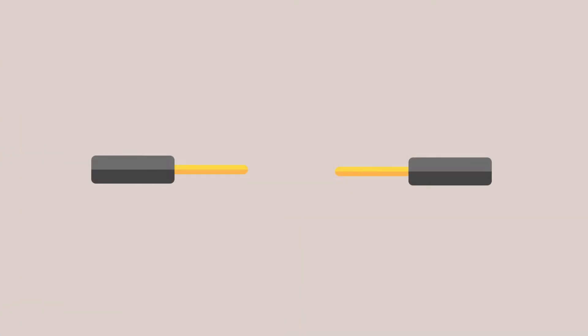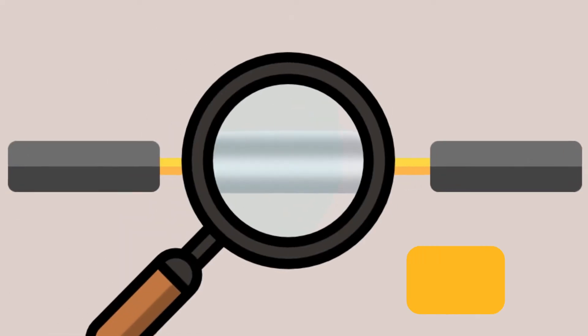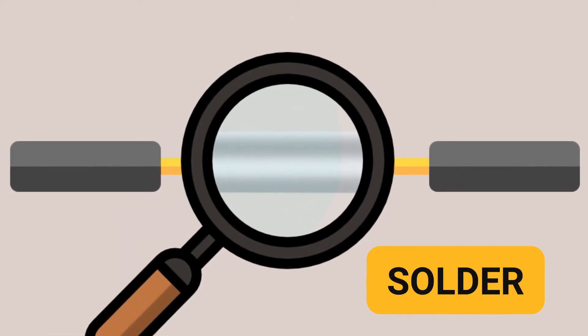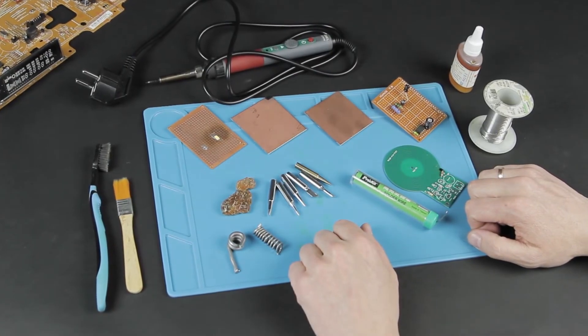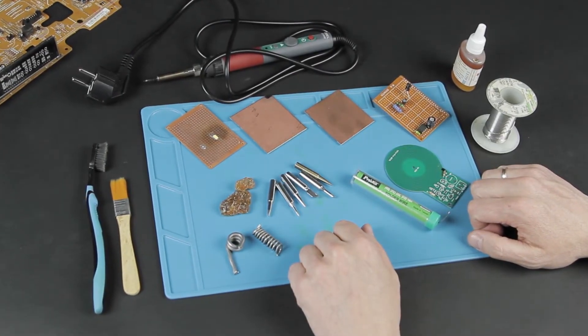What is soldering? It is the joining of two metal surfaces or objects using a third, more fusible metal. It is called solder. Solder joints are strong and conduct electricity. Solder joints are easy to disconnect.